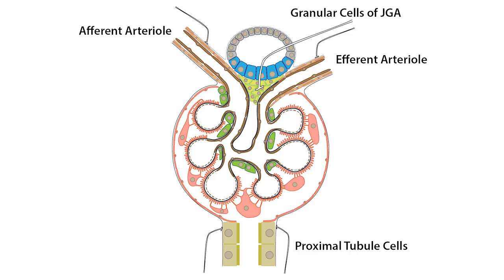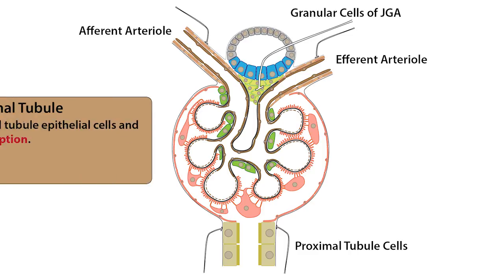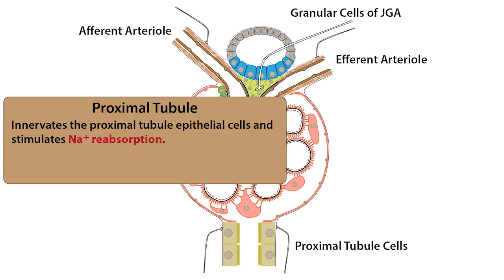Sympathetic input to the cells of the proximal convoluted tubule augments the reabsorption of sodium ions along this nephron segment, which has the net effect of maintaining blood pressure through the retention of body water.